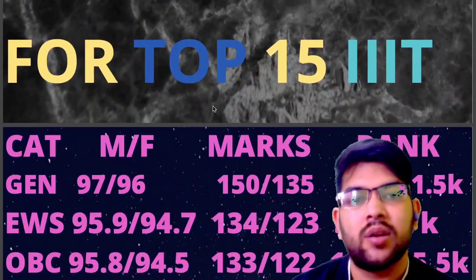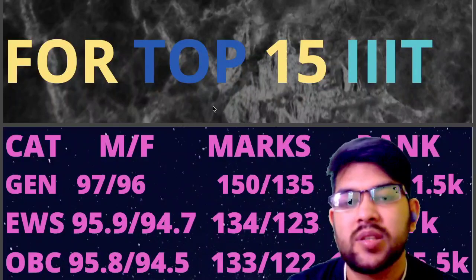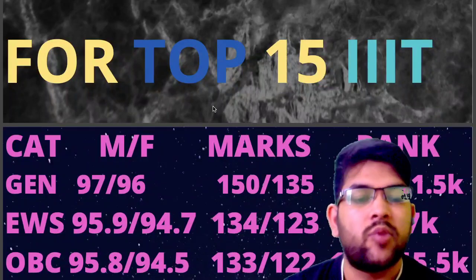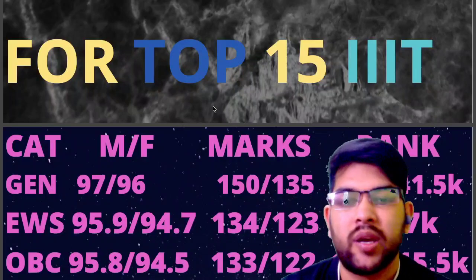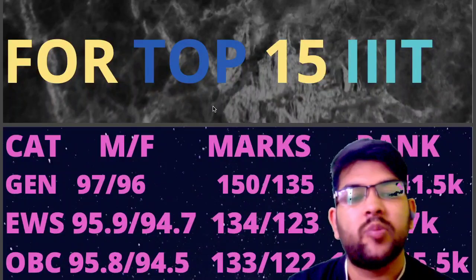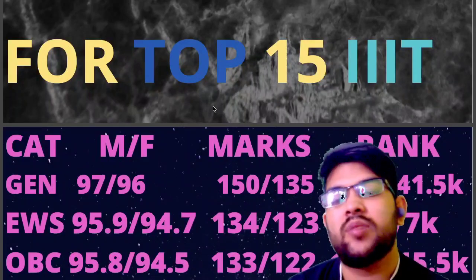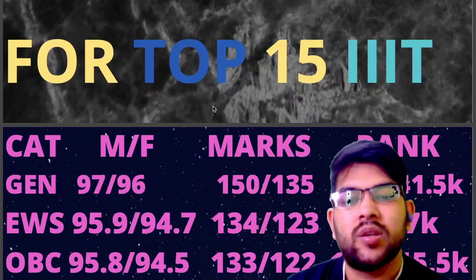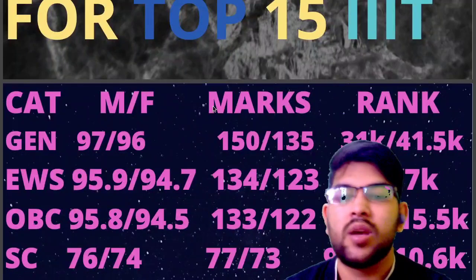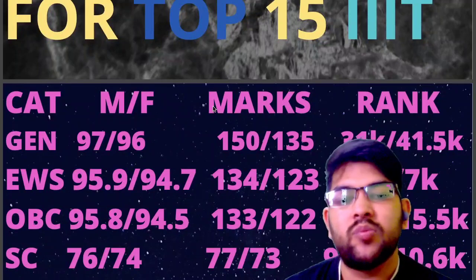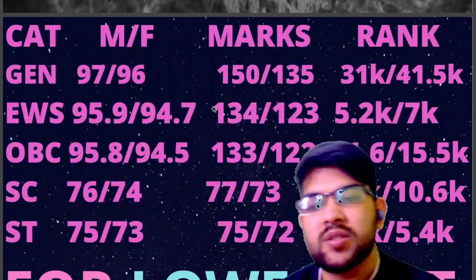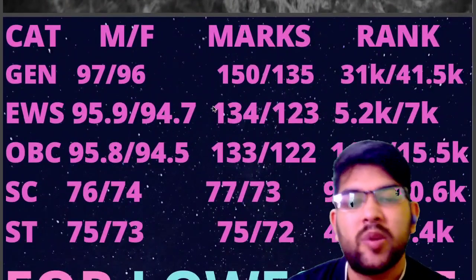For top 15 IIIT colleges: General students need 97 to 96 percentile (male and female), marks 150 to 135, rank 31,000 to 41,500. For EWS: 95.9 to 94.7 percentile, marks 134 to 123, rank 5,200 to 7,000. For OBC: marks and rank data available in video. For SC: 76 to 74 percentile, marks 77 to 73, rank 9,400 to 10,600. For ST: 75 to 73 percentile, marks 75 to 72, rank 4,900 to 5,400.